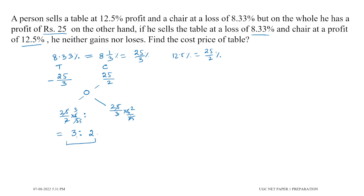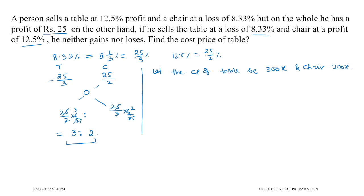The table is 300 and the chair is 200. So let the cost price of the table be 300x and the chair be 200x. We apply 12.5% profit and 8.33% loss overall, and set up the equation accordingly.